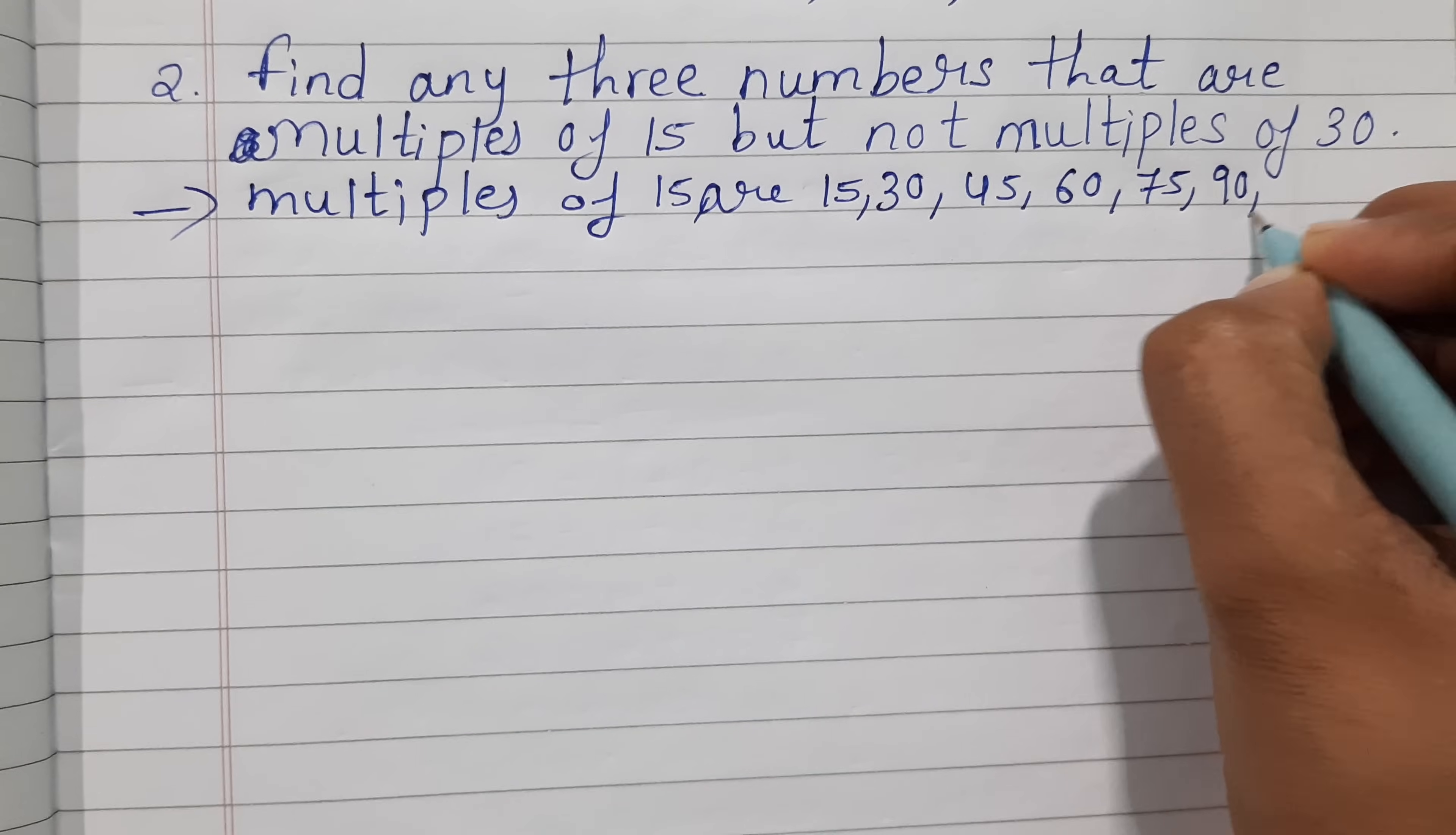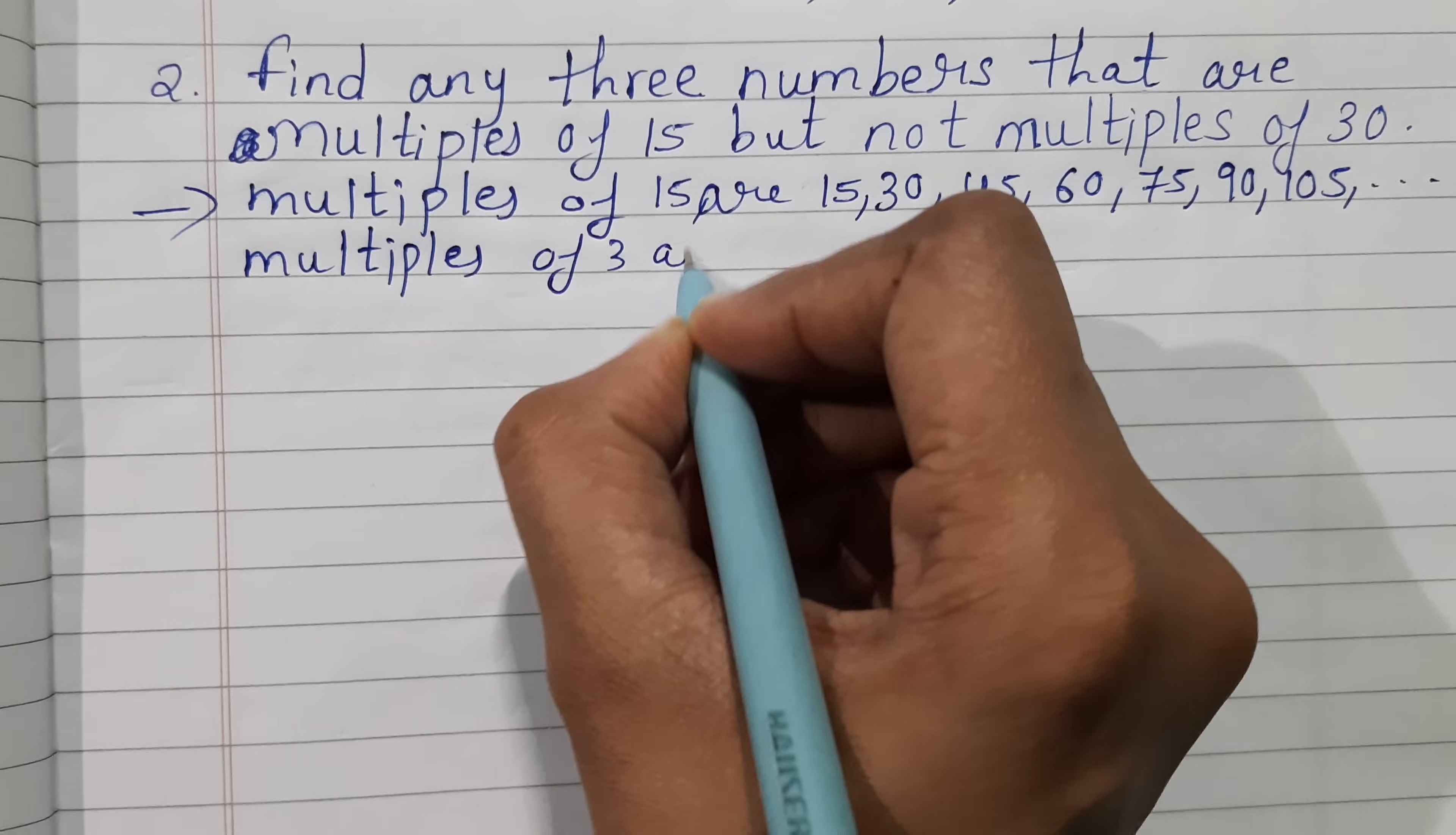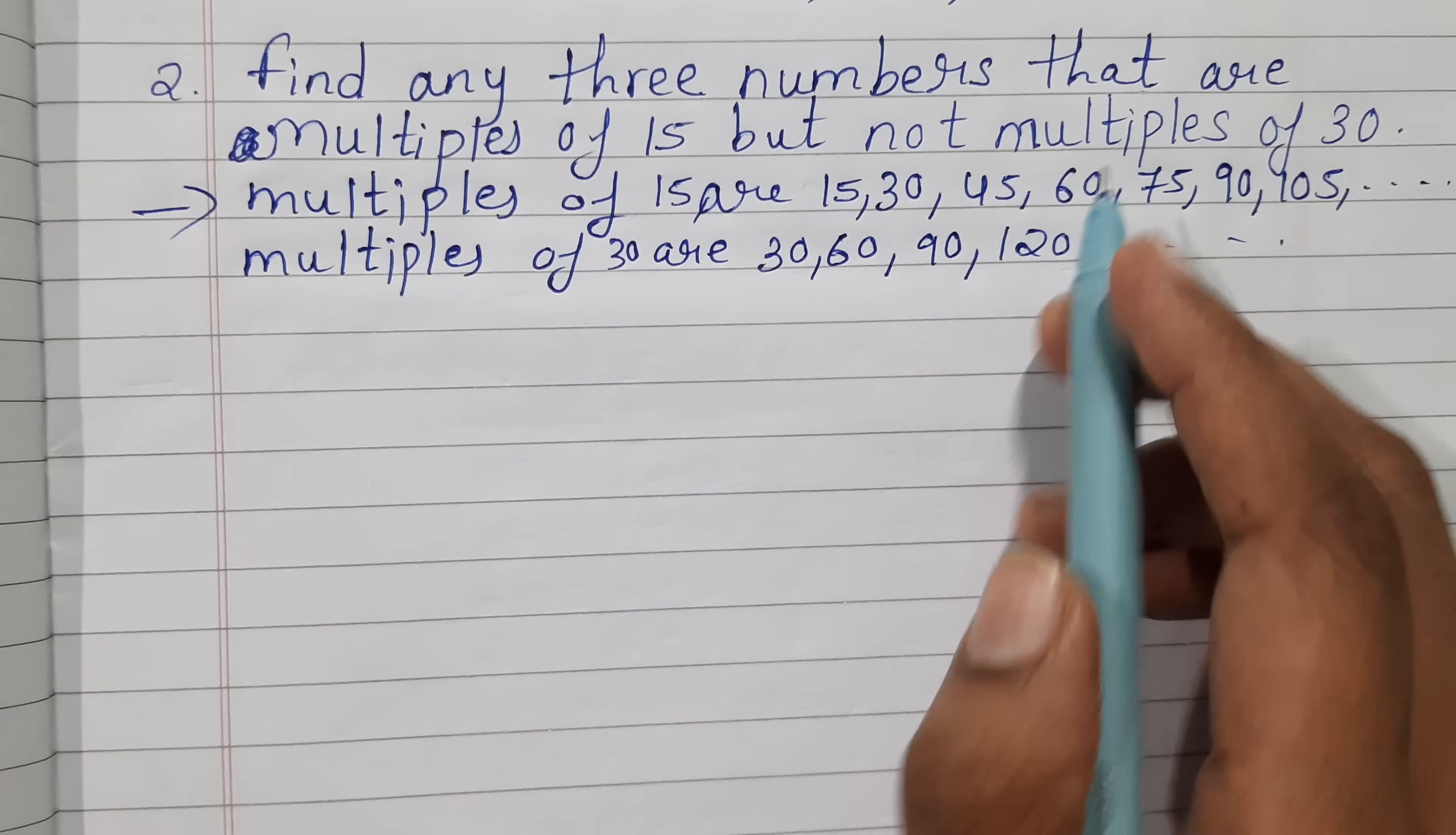15×6=90, 15×7=105, and so on. Then you can write down the multiples of 30. Multiples of 30 are: 30×1=30, 30×2=60, 30×3=90, 30×4=120, and so on.